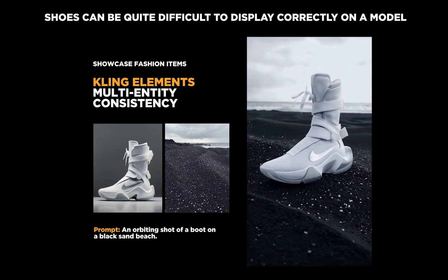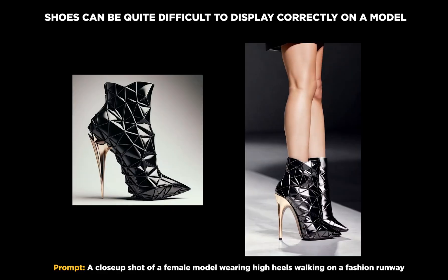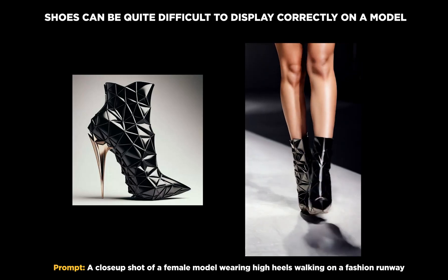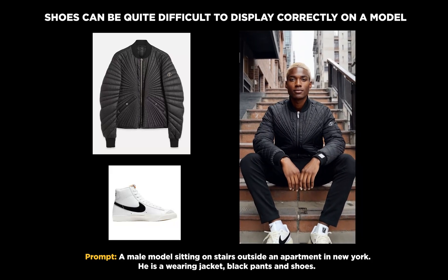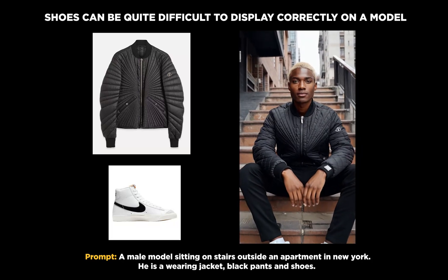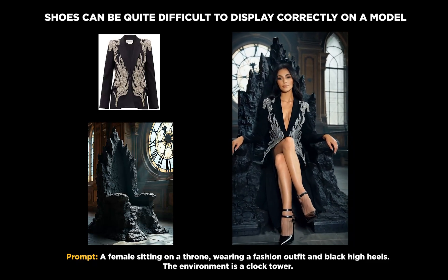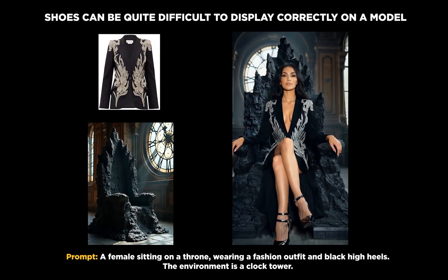Shoes are difficult to get right with Elements. The best results come from showcasing a shoe as a single item — an orbiting shot or isolated image — and prompting something like 'a model wearing high heels walking on a fashion runway.' When a model is already wearing shoes in the image, Elements gets confused and doesn't replicate the shoe accurately. It's better to just prompt the shoe type in text, like 'black high heels' or 'white sneakers.'